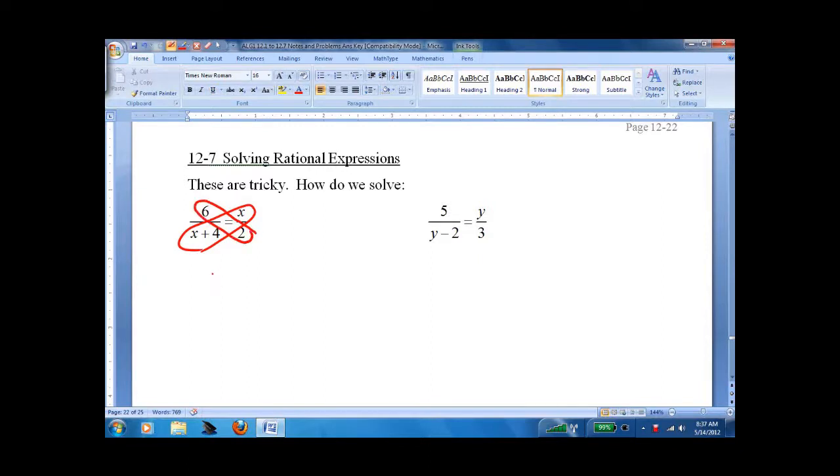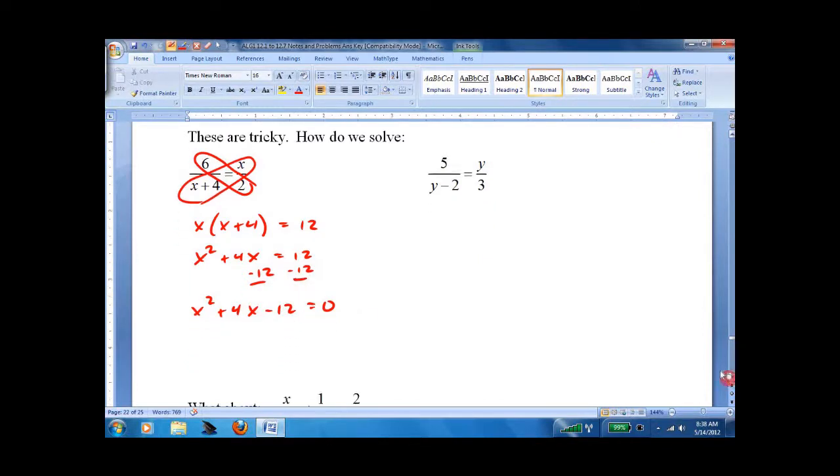Fraction on either side, so we just do the Jimmy Neutron, x times x plus 4 equals 12. That's just simple cross-multiplying. Then the rest is just some algebra. Then some factoring.